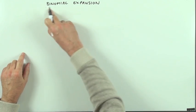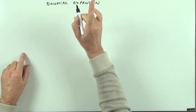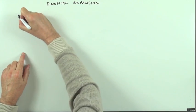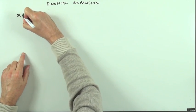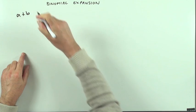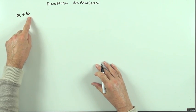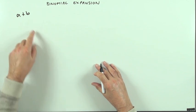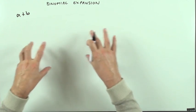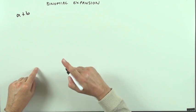A binomial expansion. Binomial meaning having two parts, like a plus b, where a and b could be constants, variables, or expressions in their own right.